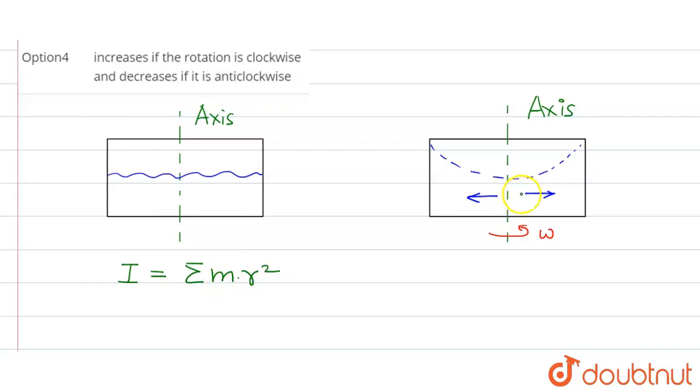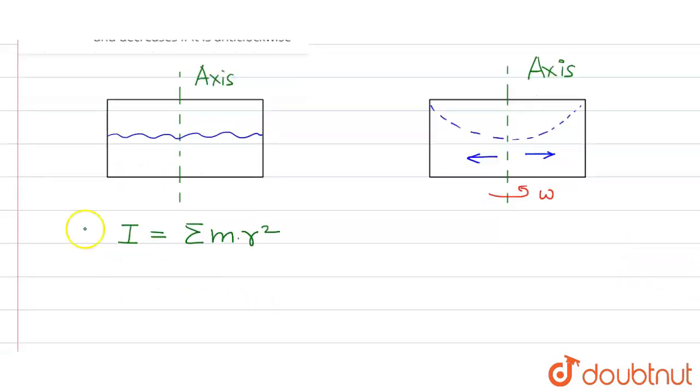Now we can see on rotation the water is moved away from the axis. So what happens? The r increases. So as the r increases, the moment of inertia increases.